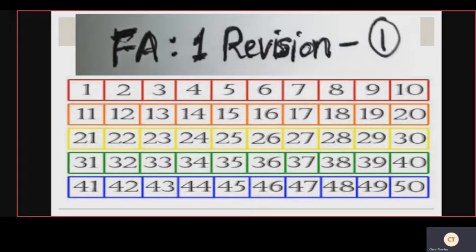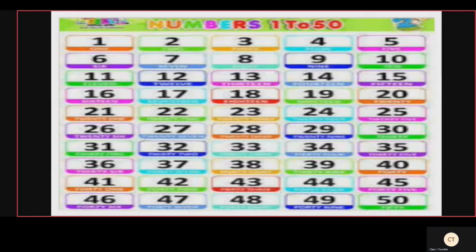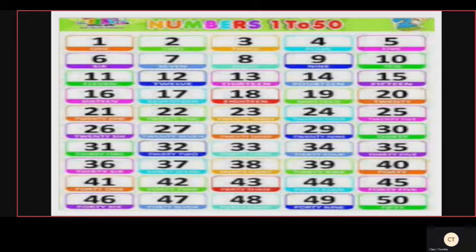Now 1 to 50 numbers are over, children. You can practice after the class. And next — again numbers 1 to 50. You start reading, children. Come on, read along with me. Join, children, join with me. Let's read fast.